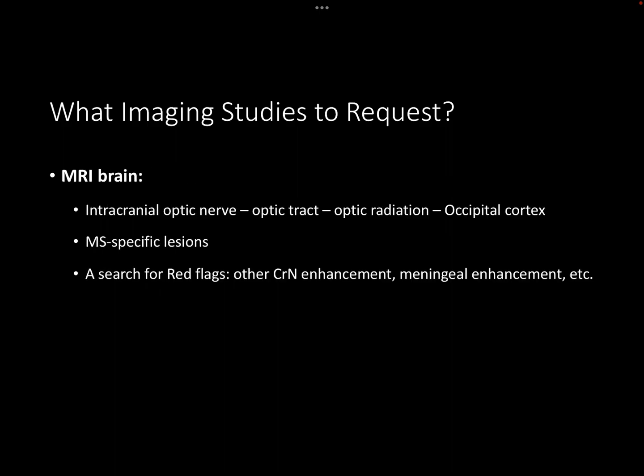You will also need to request a brain scan at the same time — ask for both scans together. If it is a case of MS, you are likely to pick up lesions from the brain more than from the optic nerve or orbit MRI itself. For the brain, you need to look at the rest of the visual pathway beyond the chiasma: the optic tract, optic radiation, and occipital cortex. You will need to look for MS-specific lesions and double-check there are no red flags such as dural or meningeal enhancement, or other cranial nerve enhancements.